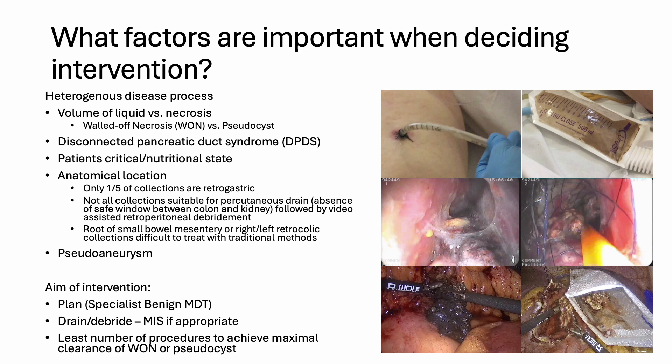We then need to think about the aim of the interventions. The first is to plan, involving a specialist benign MDT. To drain and debride, utilising minimally invasive surgery if deemed appropriate. And achieving maximal clearance of the collection with the least number of interventions.